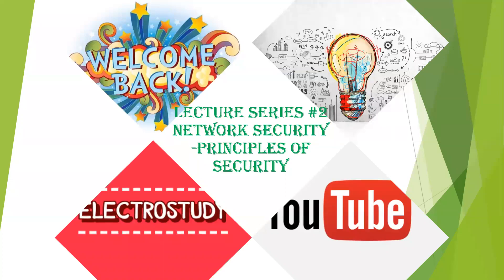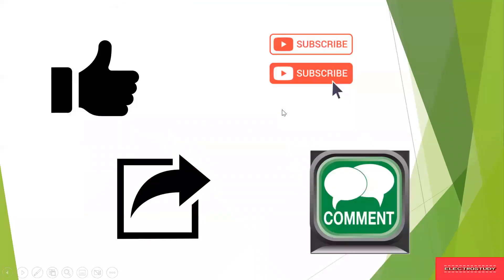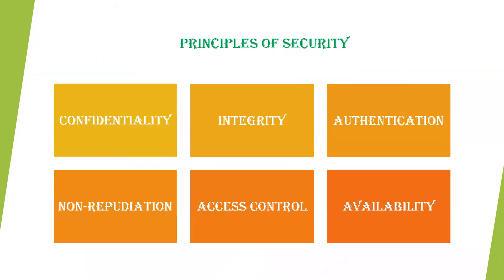Hello everyone, welcome back to our lecture series on network security dealing with principles of security. In the last video we saw about why network security is needed. For each security provider there are some principles that should be followed: confidentiality, integrity, authentication, non-repudiation, access control, and availability. In this video we'll be looking at what these six basic principles of security are.